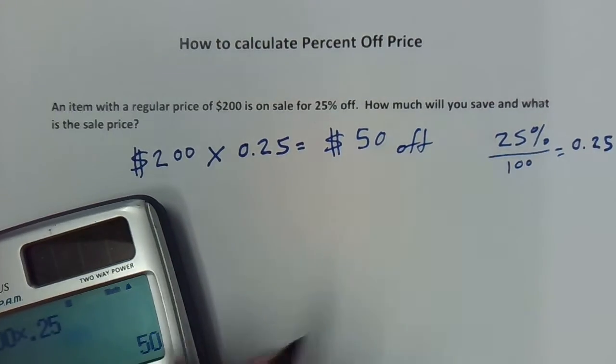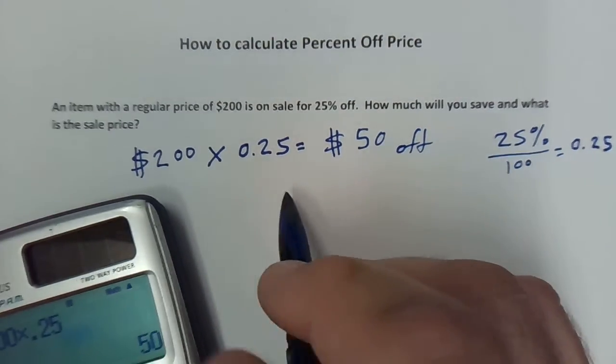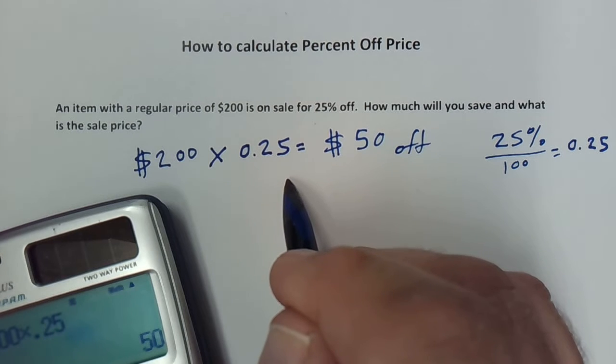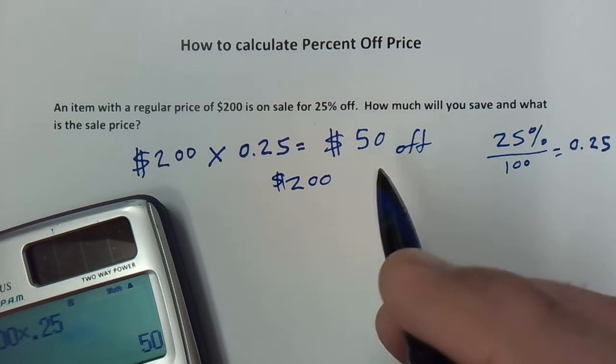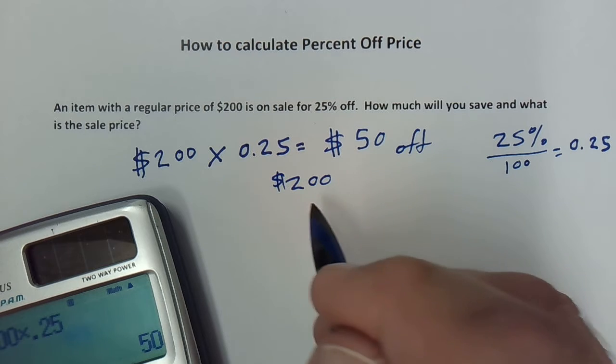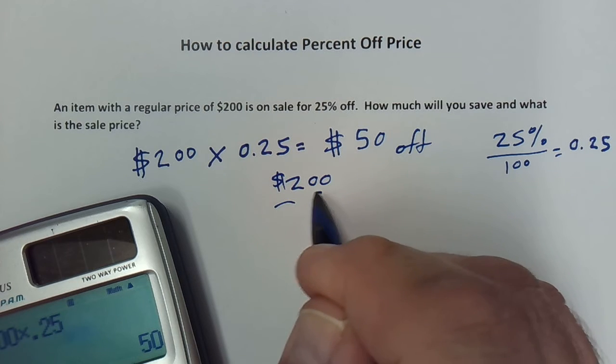And if you want to find out the sale price, you would just take the original price of $200 and subtract the $50 off, which gives you a sale price of $150.